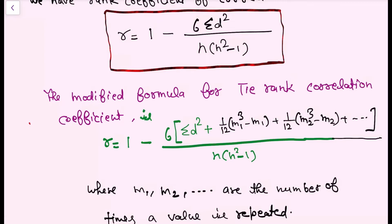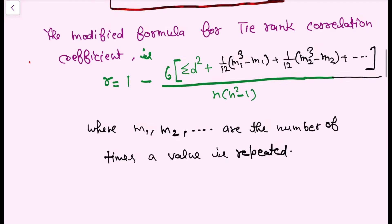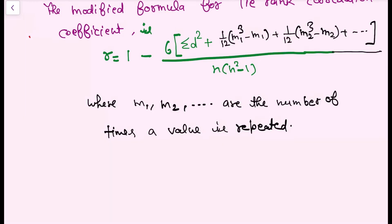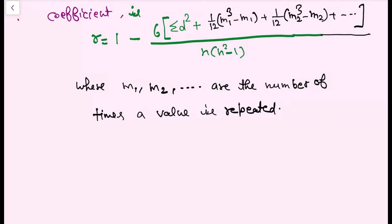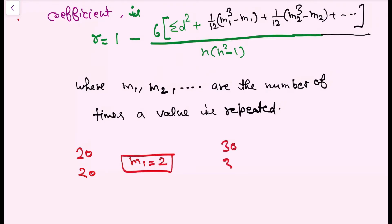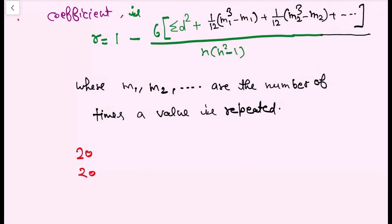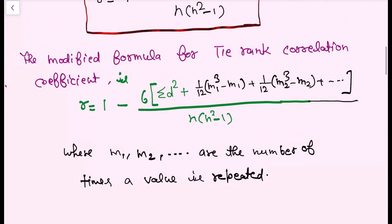You may wonder what m1 and m2 are. Where m1, m2 are the number of times a value is repeated. For example, if the value 20 is repeated 2 times, then m1 = 2. If value 30 is repeated 3 times, then m2 = 3. Using this formula, we can find the rank coefficient of correlation very easily.